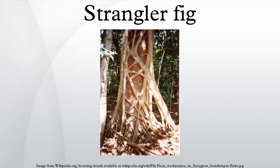An original support tree can sometimes die, so that the strangler fig becomes a columnar tree with a hollow central core.